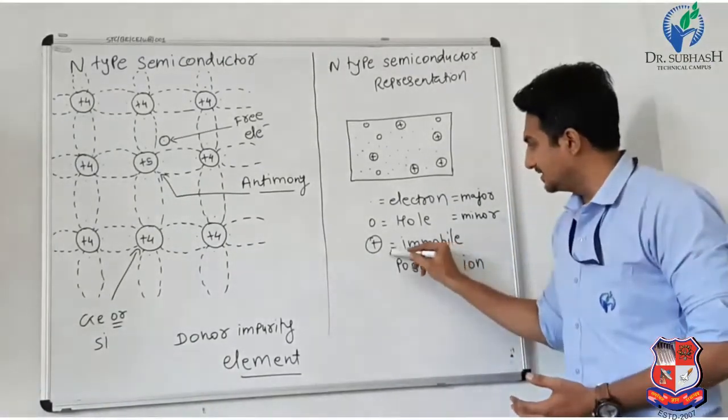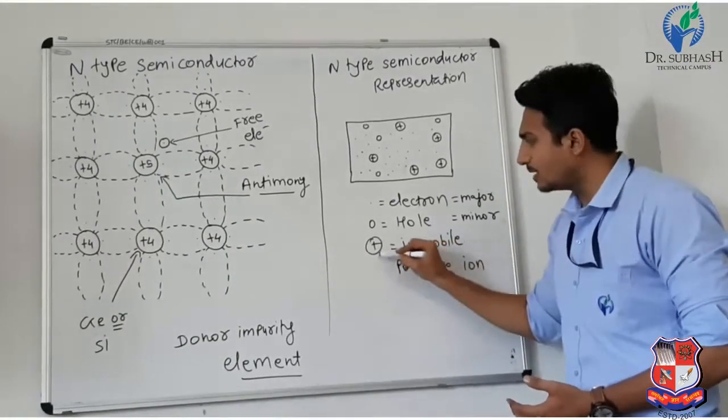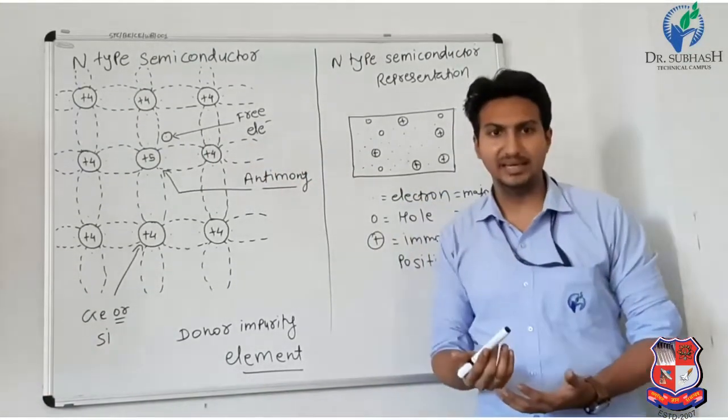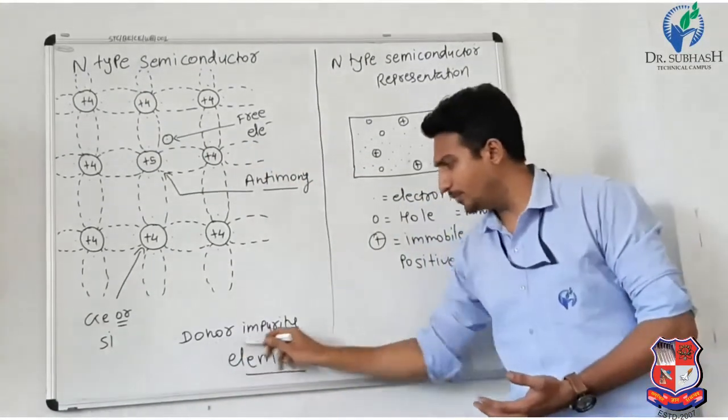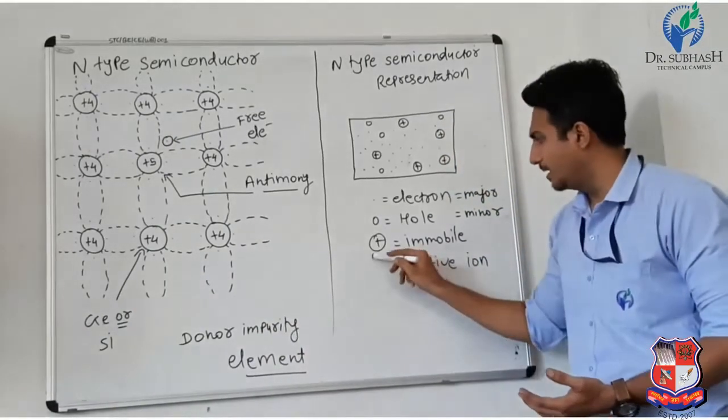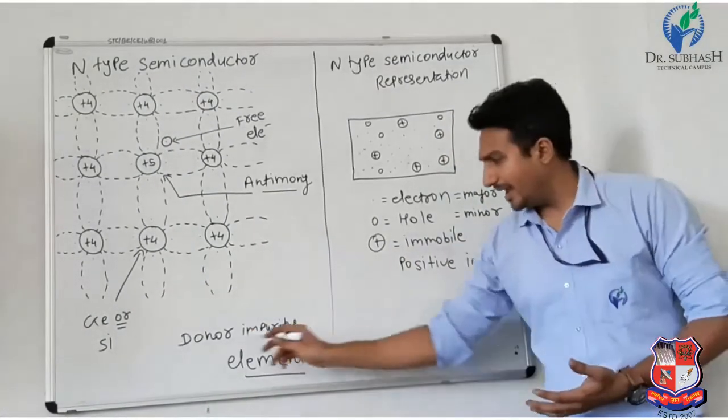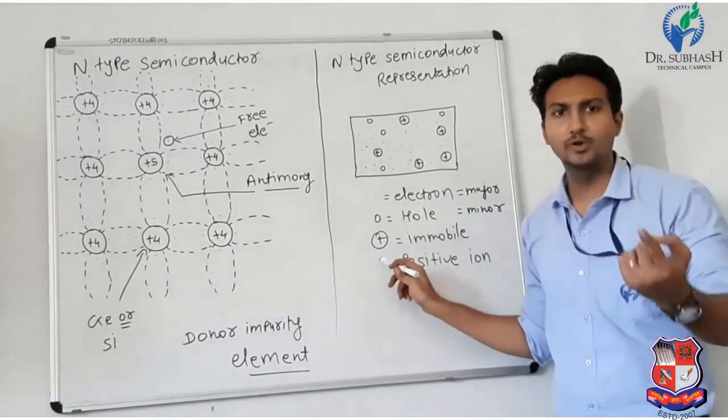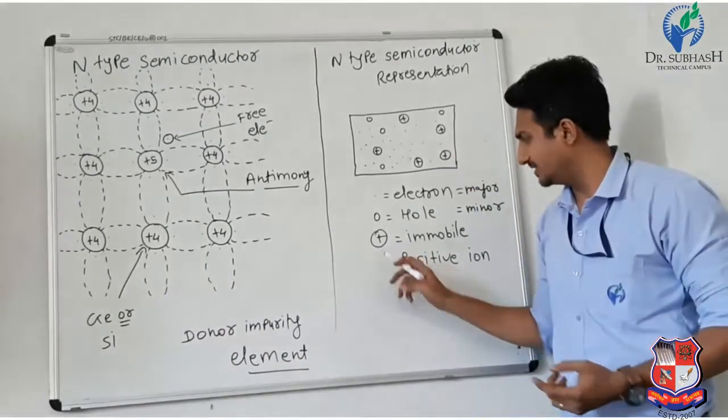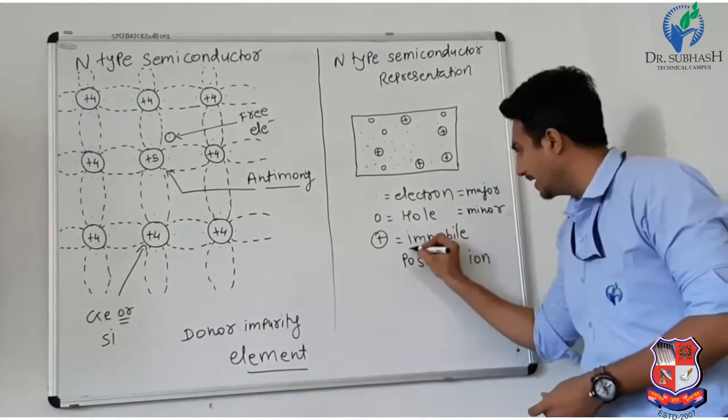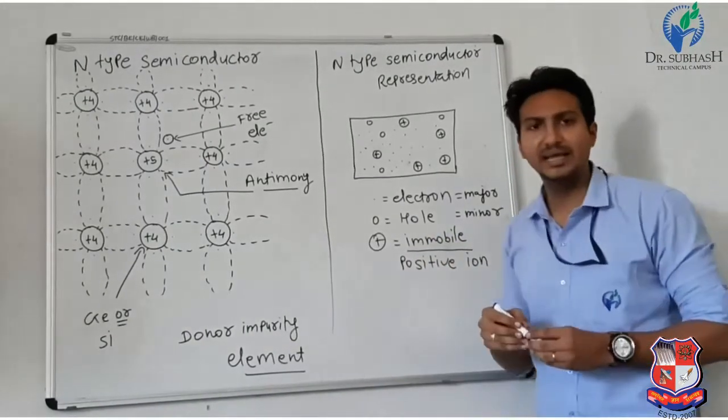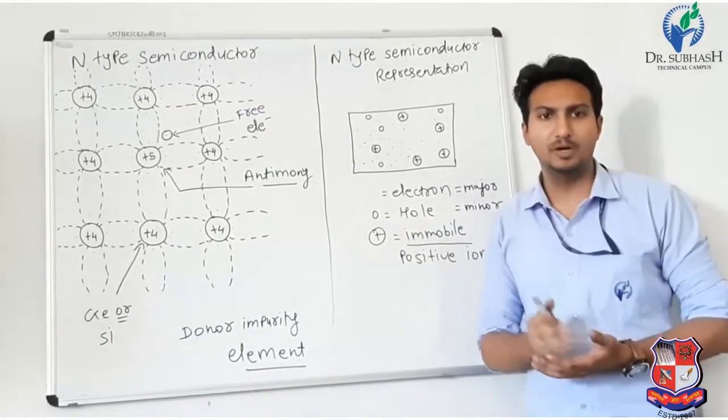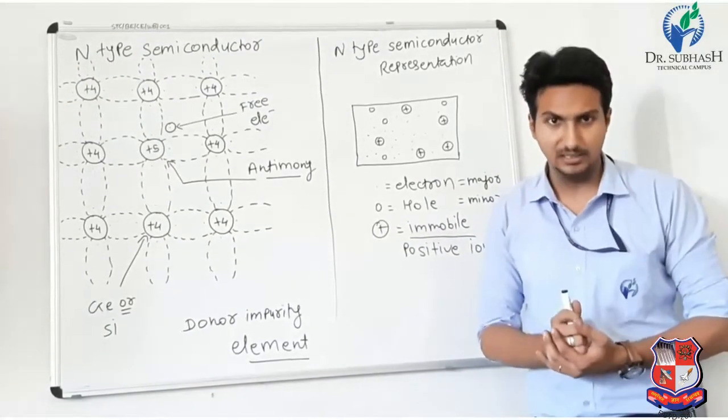When we have a positive ion from the donor impurity element, this positive ion is immobile. It remains fixed in place even when we have a battery connection or power supply connection.